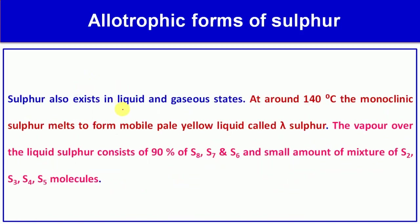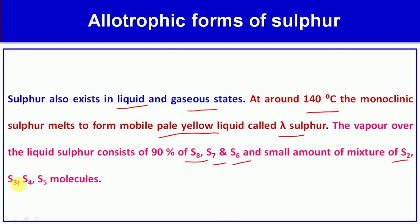Sulfur also exists in liquid and gaseous states. At around 140°C, monoclinic sulfur melts to form a mobile pale yellow liquid called lambda sulfur. The vapor over liquid sulfur consists of 90% S8, S7, and S6, along with small amounts of S2, S3, S4, and S5 molecules.